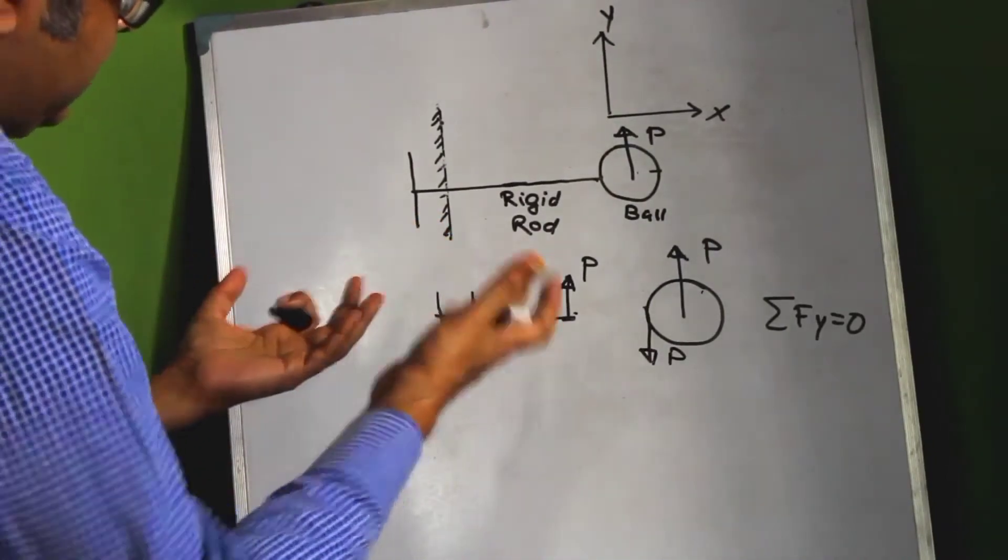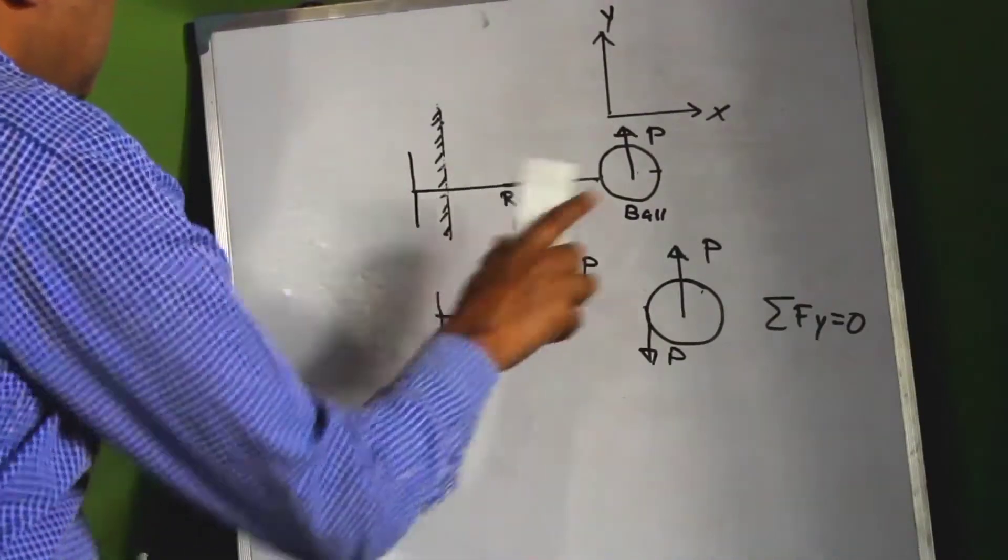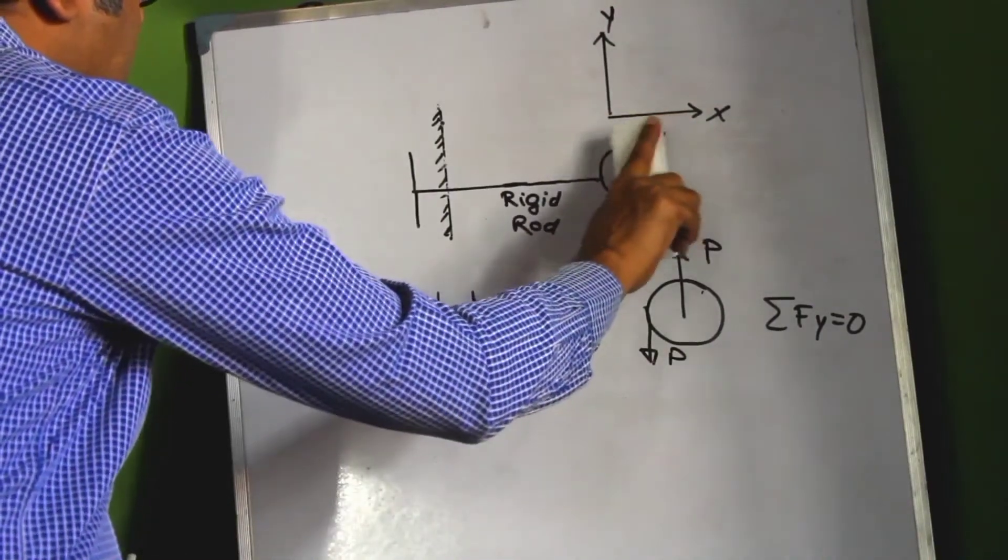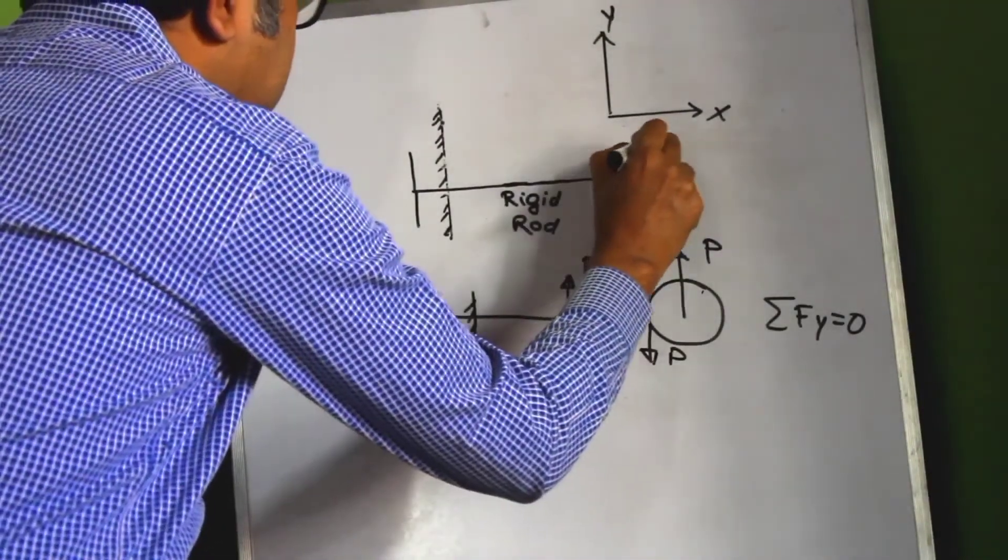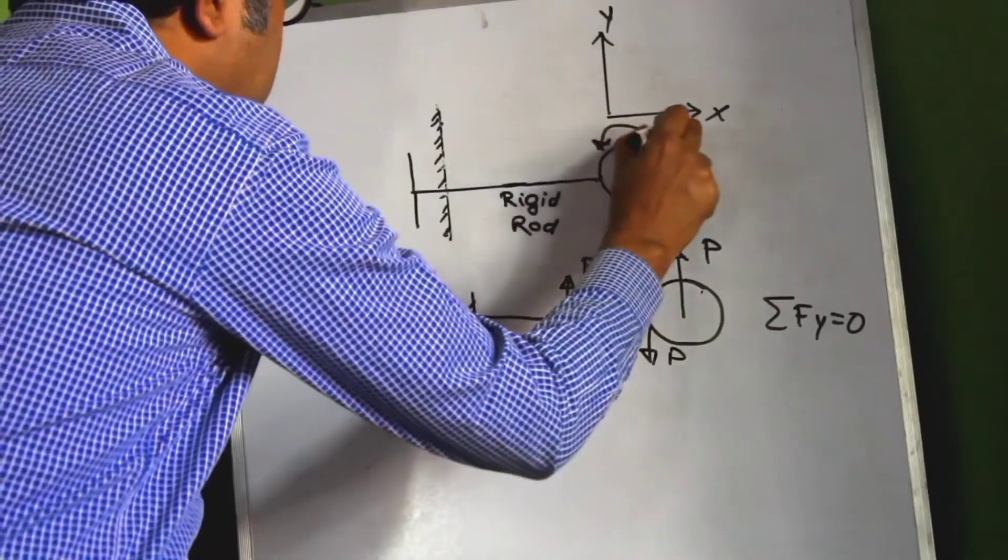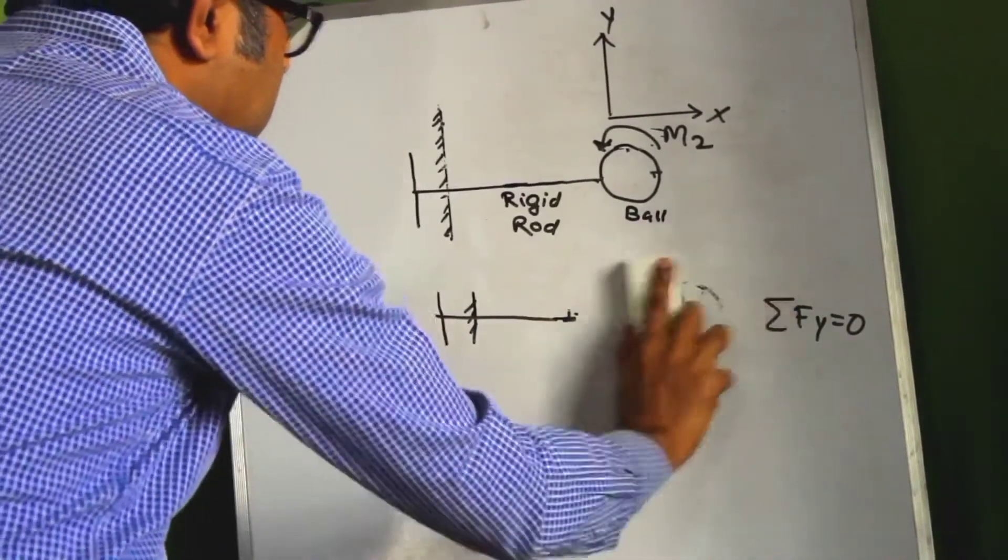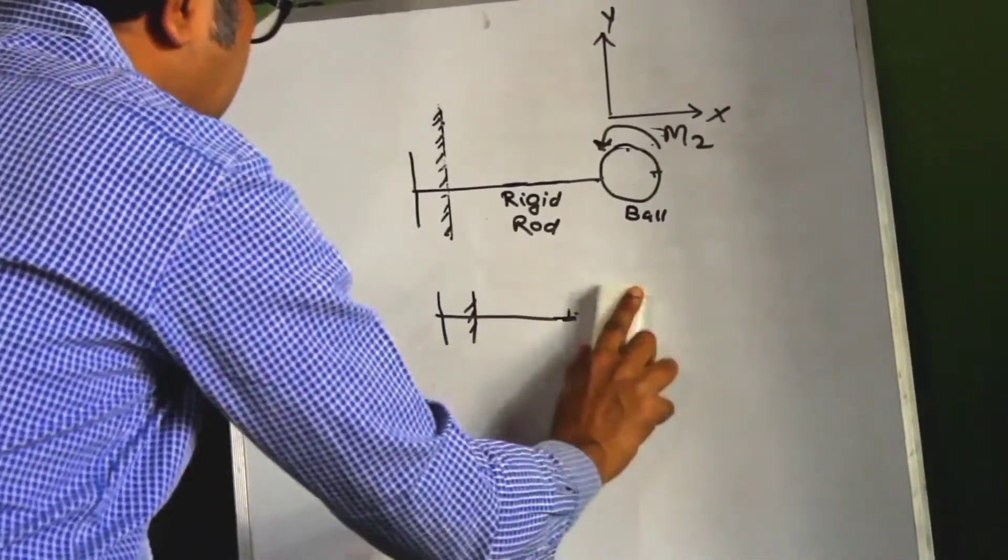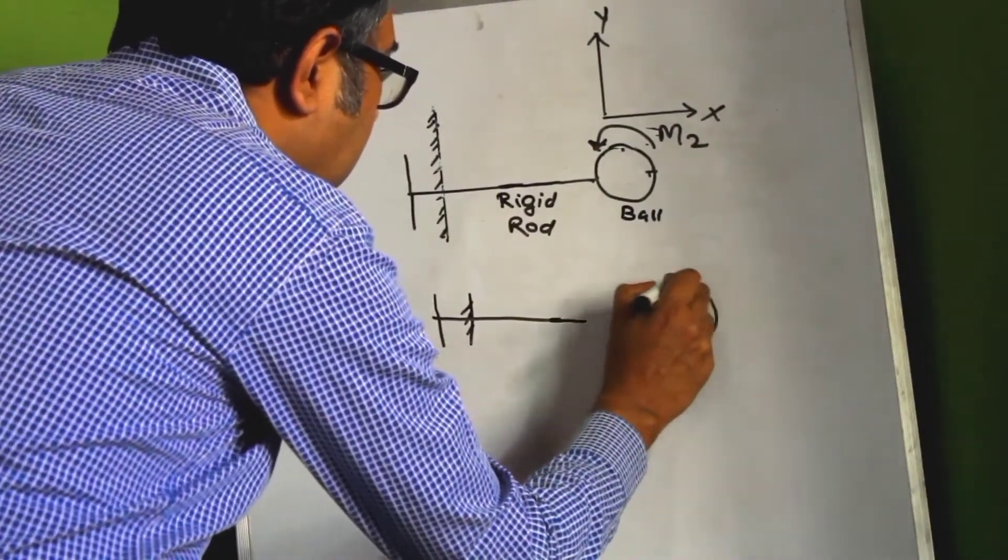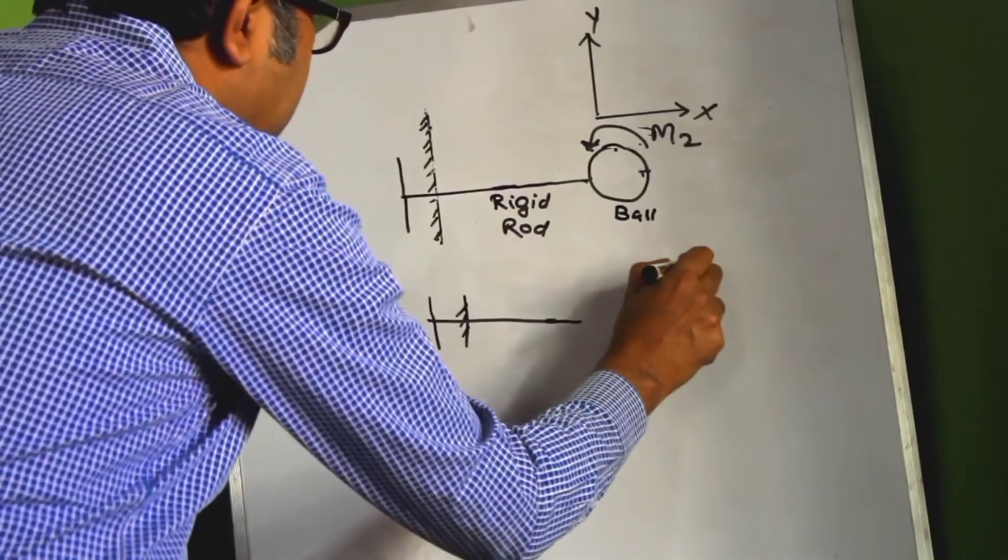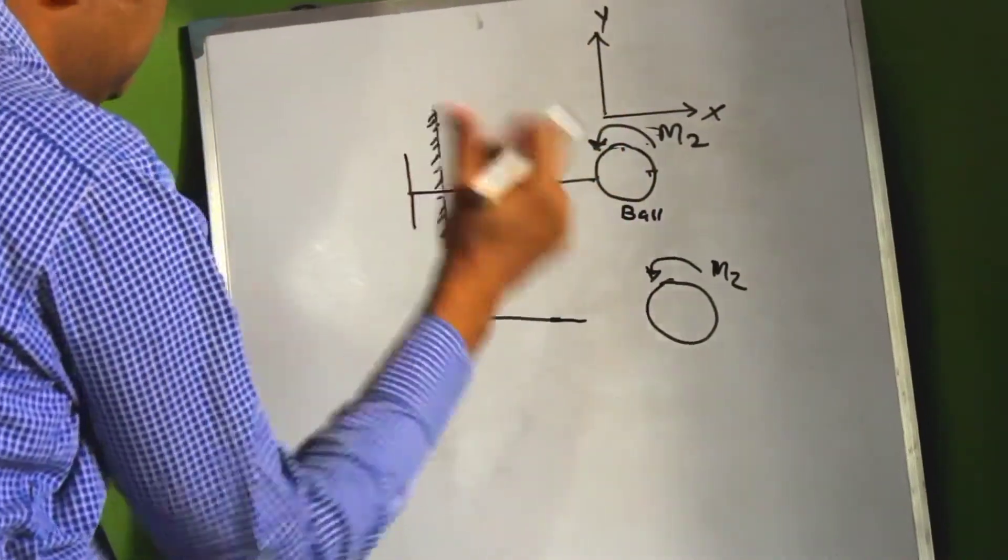The same thing will happen if you try and apply the force in the Z direction. Now think of a condition where you apply a moment MZ on the ball. So this diagram would change. We draw this segment. So this is the rigid rod and this is the ball. And now we apply this moment MZ. So see this is X this is Y. So Z should be this. So this should be MZ.